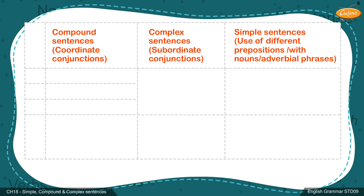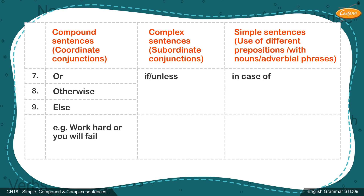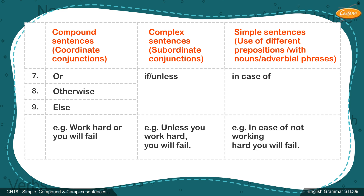Compound sentence conjunctions 7. Or. 8. Otherwise. 9. Else. Complex sentence conjunctions: If, Unless. Simple sentence: In case of. Compound sentence example: 'Work hard or you will fail.' Complex sentence example: 'Unless you work hard, you will fail.' Simple sentence example: 'In case of not working hard, you will fail.'